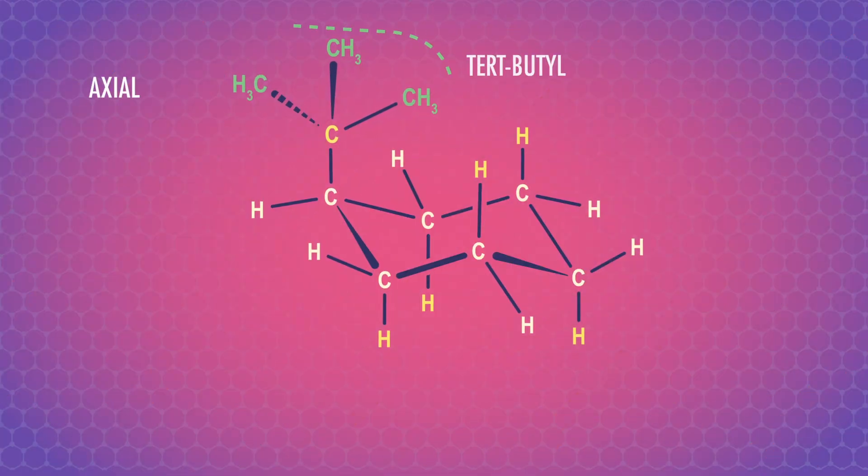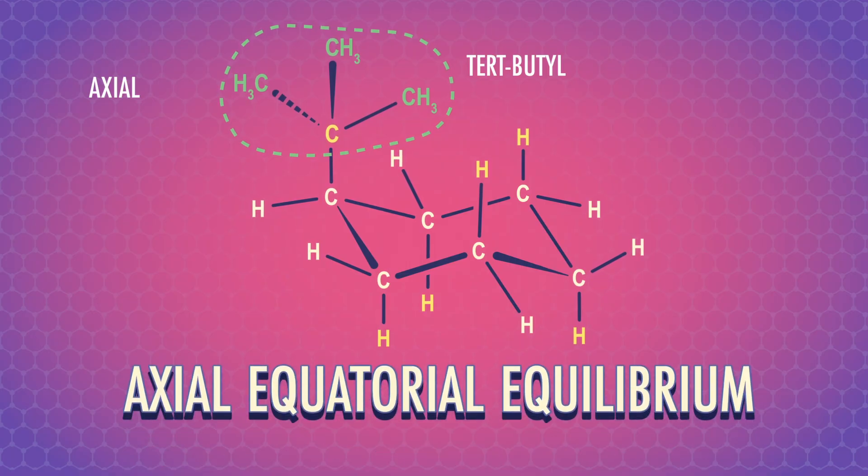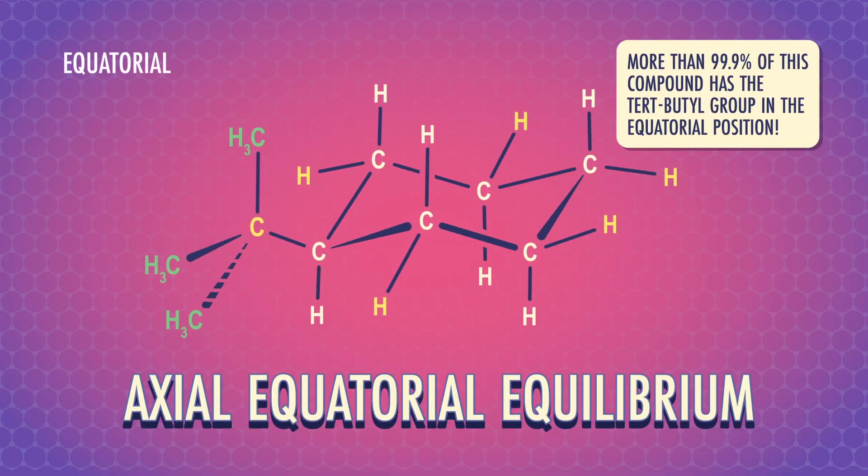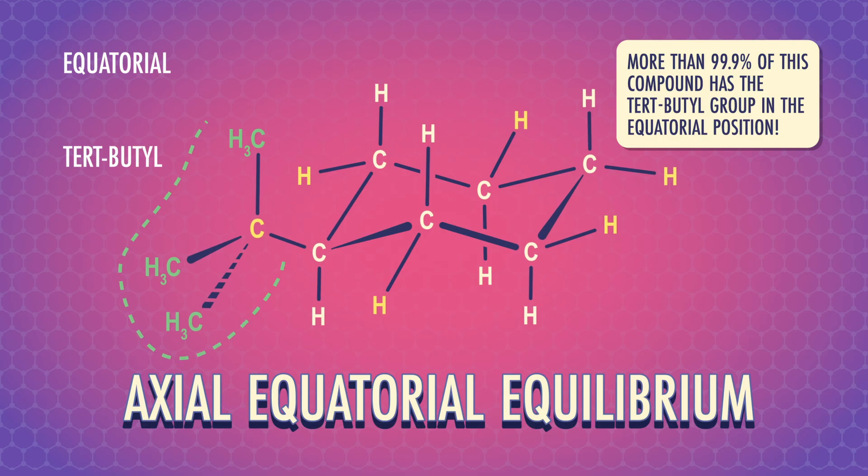Neighboring atoms just get too crowded with too much diaxial strain in the axial position. In fact, more than 99.9% of this compound has the tert-butyl group in the equatorial position. Now, we've been drawing a lot of chairs at this point, and let's be honest, you might want to flip a real chair. I know that I do. But take a breath, and when you're ready, there's one more thing to learn.